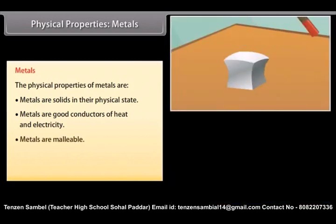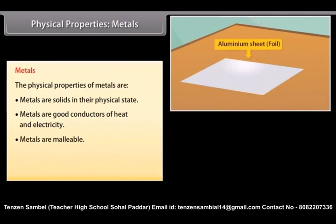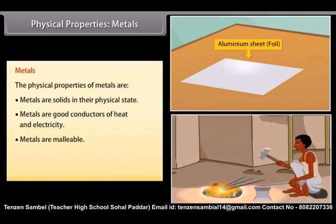Malleable. Metals can withstand hammering and be made into thin sheets known as foils. For example, iron is heated and then hammered into different forms, foils, shapes, etc.